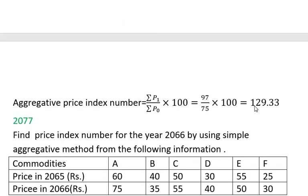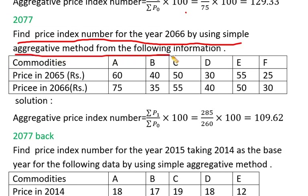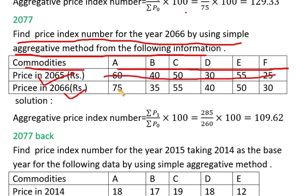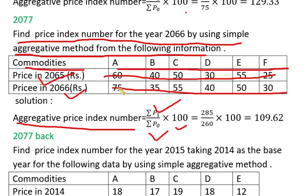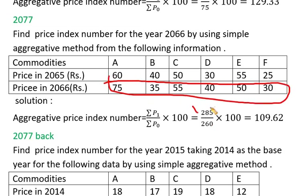From the following information: commodities, price in 2065 and 2066. We identify P0 and P1. The aggregative price index number formula is summation P1 by summation P0 multiplied by 100. The price index number values used are 75 and 35, giving a result of 206.